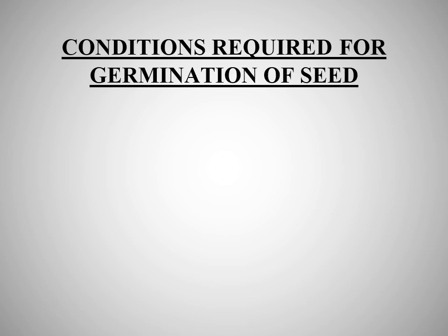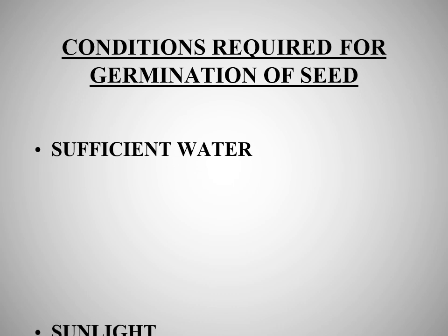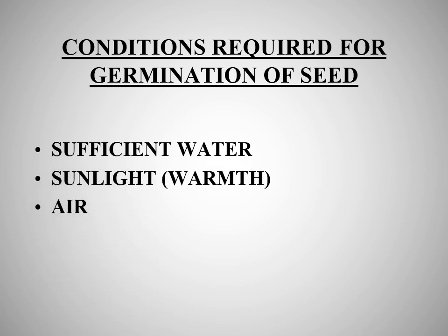These are the conditions required for germination of a seed: sufficient water, sunlight, and air. As you know, plants make their own food. They need all three things — water, sunlight, and air — so that they can grow bigger.